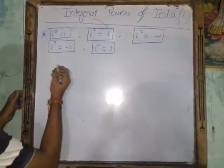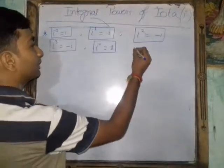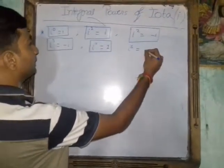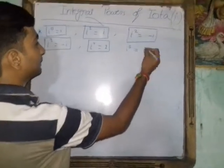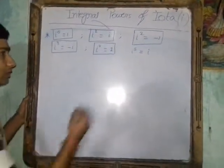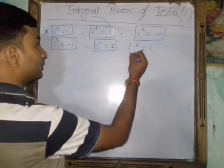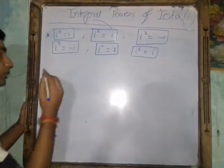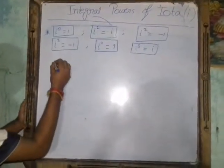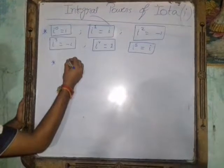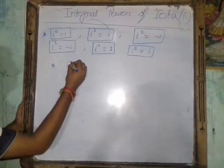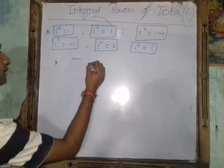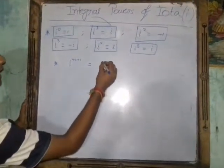Now, further, when we investigate i to the power 5, we get it as i. So from all these observations, we get one common thing: when we get i to the power 4n plus 1, our answer is i.